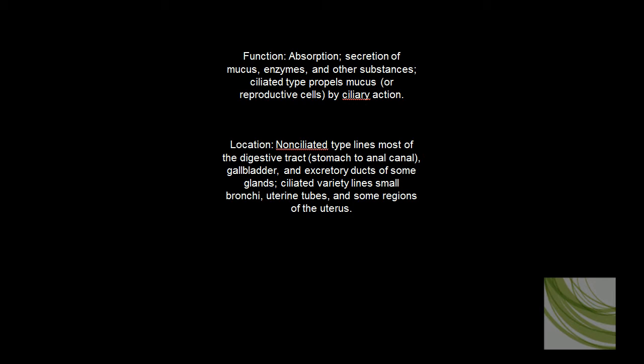We'll also find simple columnar that is ciliated in areas of the bronchi, the uterine tubes, and some parts of the uterus. In this area, they primarily propel, with the use of cilia, the mucus in a certain direction.